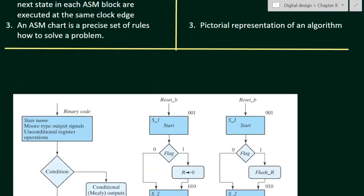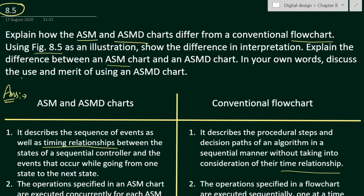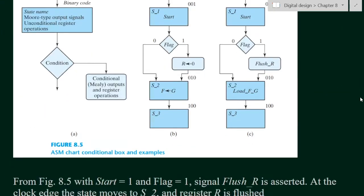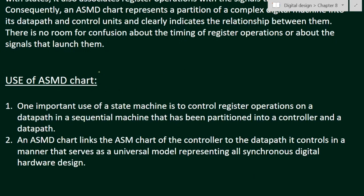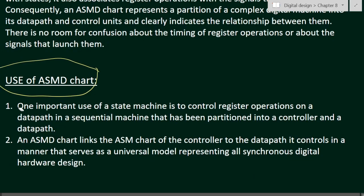Now for the fourth part, we discuss the use and merit of the ASMD chart. The first use is that one important use of a state machine is to control register operations on a data path in a sequential machine that has been partitioned into a controller and a data path. The second use is that an ASMD chart links the ASM chart of the controller to the data path it controls, serving as a universal model representing all synchronous digital hardware design.